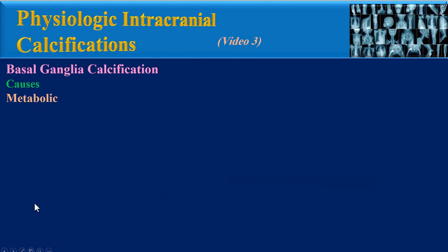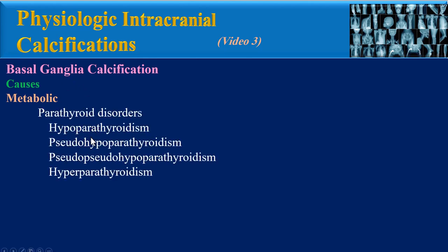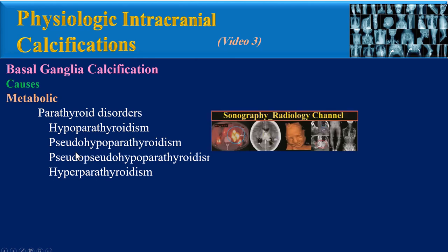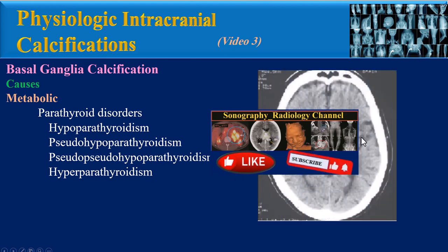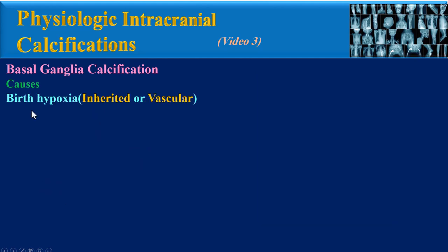Metabolic causes of basal ganglia calcification include parathyroid disorders, including hypoparathyroidism, pseudohypoparathyroidism, pseudo-pseudohypoparathyroidism, and also hyperparathyroidism. Another metabolic cause is hypothyroidism. Another cause is birth hypoxia, which may be inherited or vascular.